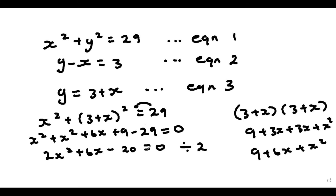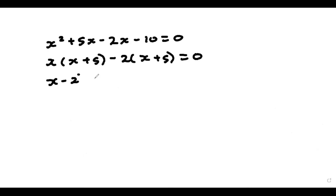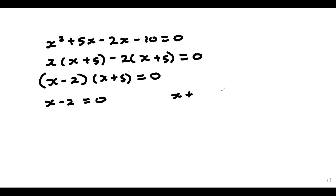I can now divide throughout by 2 to make this easier, because the coefficient for x squared, the coefficient for x, and the constant are all divisible by 2. So I'm going to have x squared plus 3x minus 10 is equal to 0. Using the AC method, 1 times minus 10 gives me minus 10, so I need two factors of minus 10 that give me positive 3 — that would be positive 5 and minus 2. So we have x squared plus 5x minus 2x minus 10 equals 0, which factors to x(x plus 5) minus 2(x plus 5) equals 0. So we have (x minus 2)(x plus 5) equal to 0, giving x equals 2 and x equals minus 5.